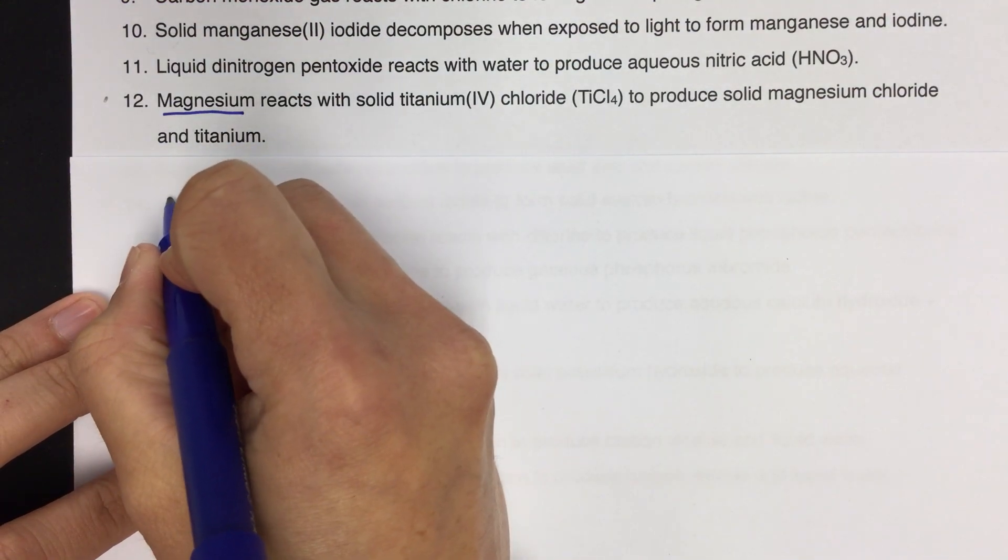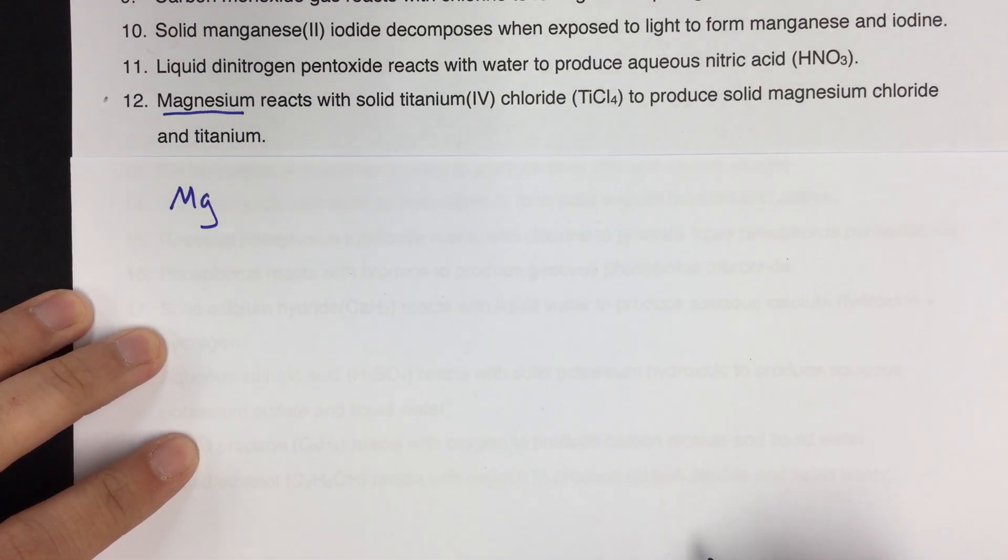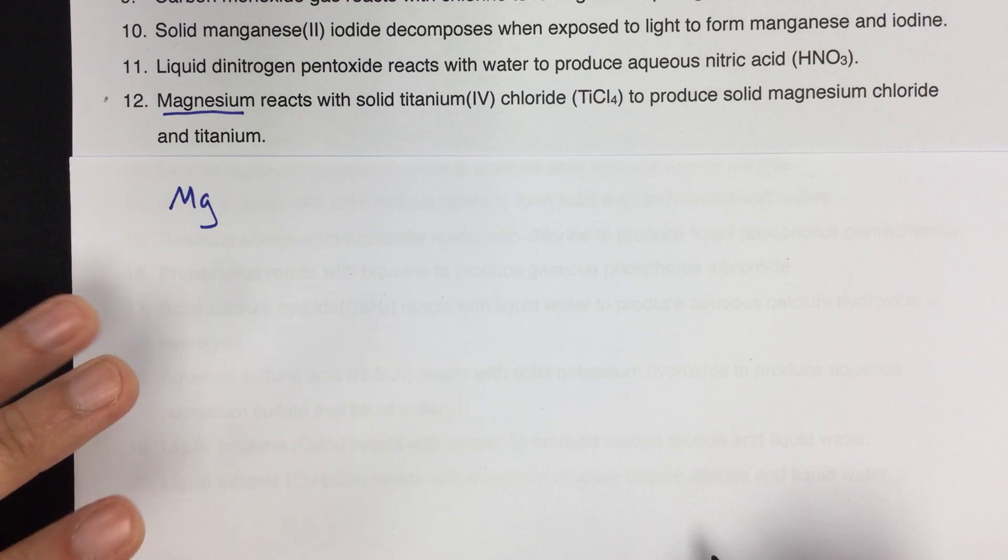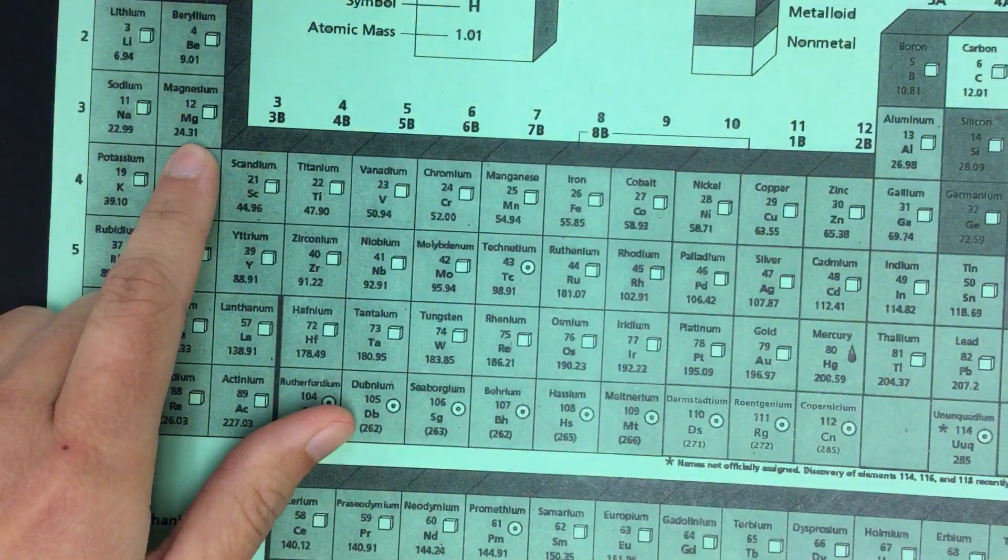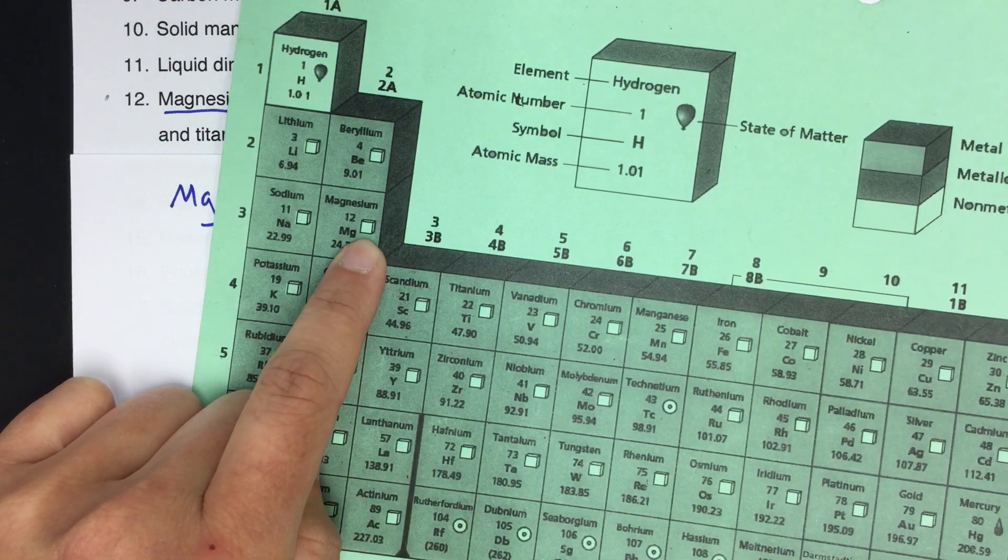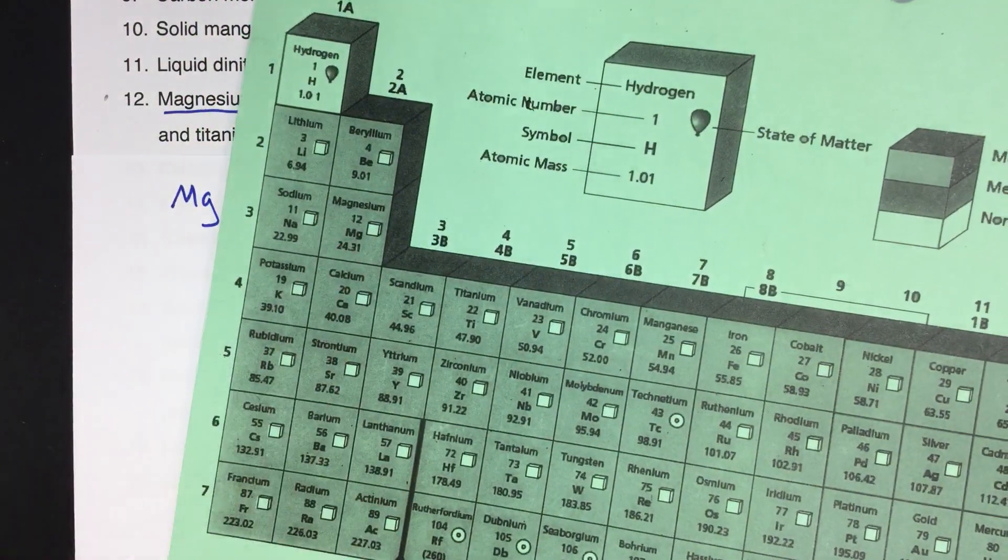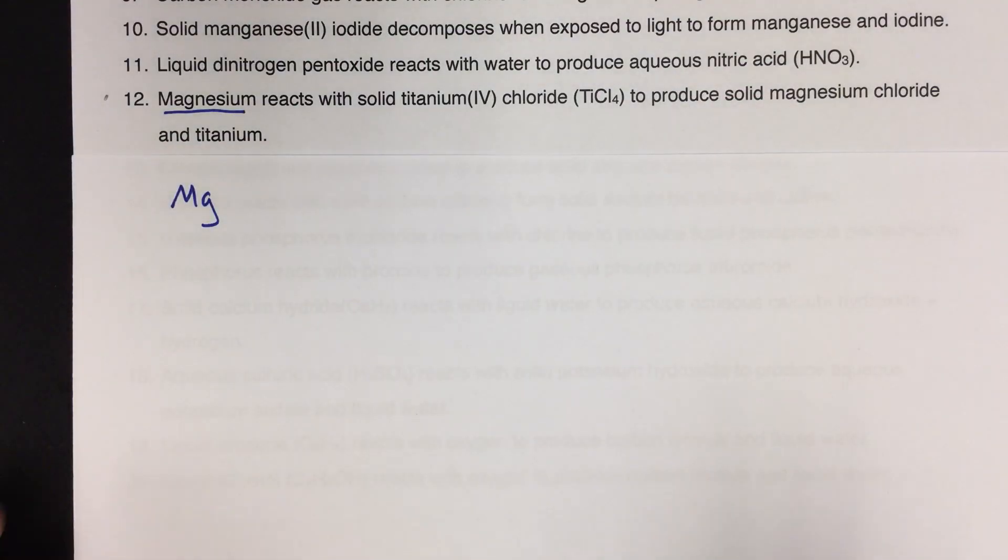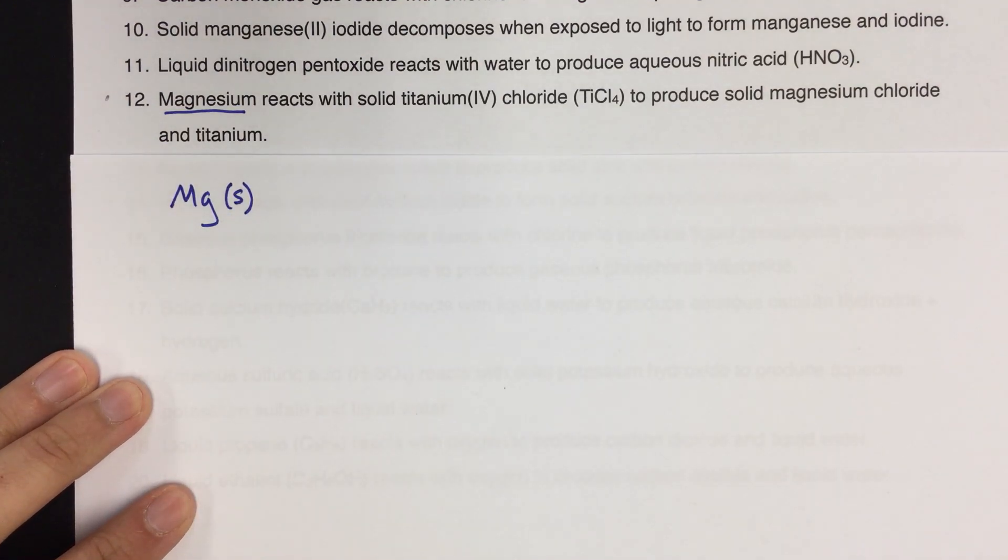And I'm going to write the phases. So magnesium, we need a phase here. And since it's an element, you can get its phase just from the periodic table. So because it has that box right there, get your key, that means it's a solid. So the phase of magnesium at room temperature is solid. So we're going to put parentheses S here to signify that it is in the solid phase. So that's the first part, magnesium.